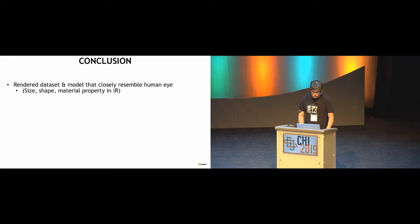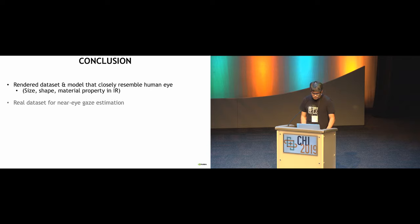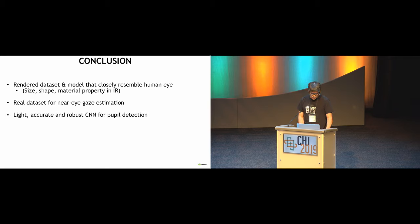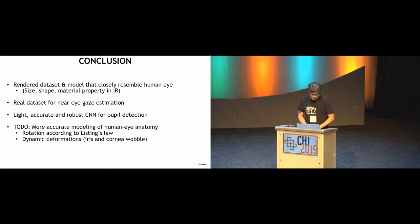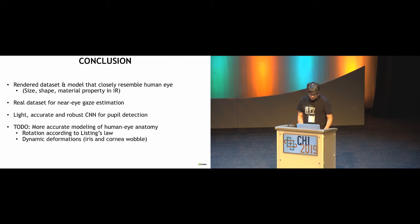As a conclusion, we are providing a rendered dataset based on previous work, modified to closely reflect the actual anatomy of human eyes important for near-eye configuration. We share a real dataset specifically captured in near-eye geometrical configuration. We show one example — a light, accurate, and robust method for detecting where the pupil is in the image — and there are more examples in our paper. Some work remains, such as modeling eyeball rotation and dynamic deformation of the eye when changing gaze, but that's for future work.